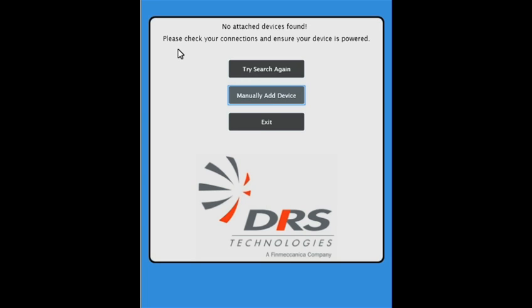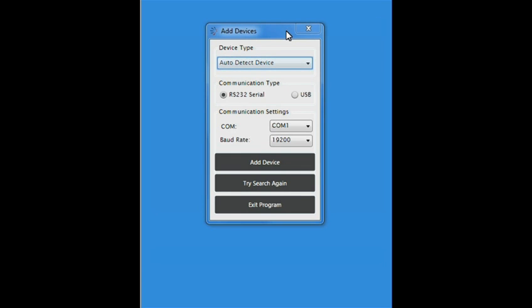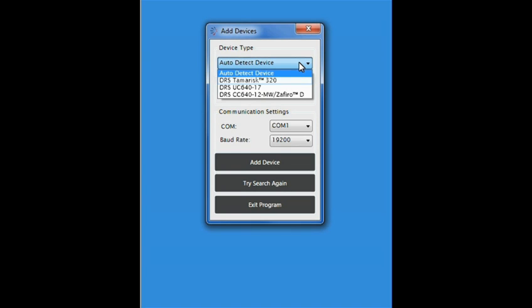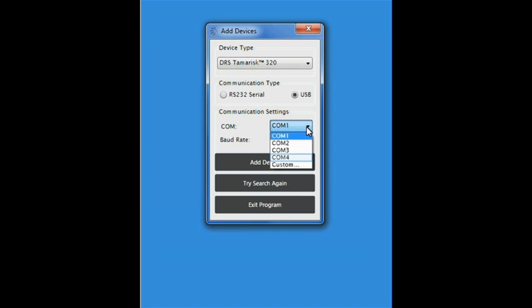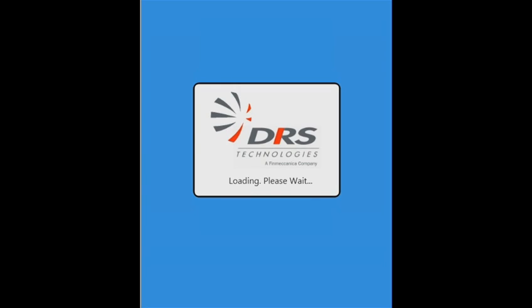The software should auto detect the camera. In some cases, however, you may need to manually add the device. In this case, click the manually add device button. From the auto detect device pull down menu, select DRS TamRisk 320. For communication type, select USB. Click the COM button and choose your COM port. Click on the baud rate button and choose 19-2. Then click the try search again button. If the camera is still not found, make sure you've selected the right COM port.